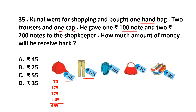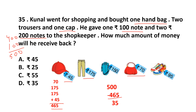He gave Rs. 100 plus 2 Rs. 200 notes = Rs. 100 plus Rs. 400 = Rs. 500 to the shopkeeper. Change received = Rs. 500 minus Rs. 465 = Rs. 35. The answer is option D.